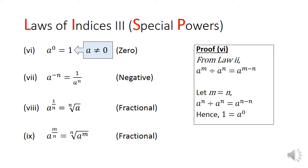The proof is a consequence of law 2. If we set m to be equal to n, we will get on the left hand side a to the power of n divided by a to the power of n, which is 1, and on the right hand side we will get a to the power of n minus n, which is a to the power of 0.